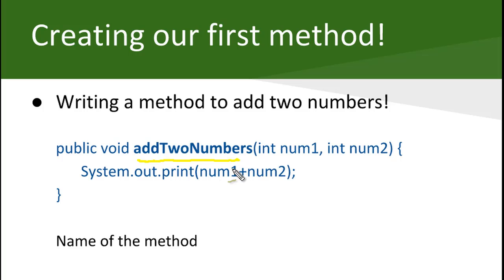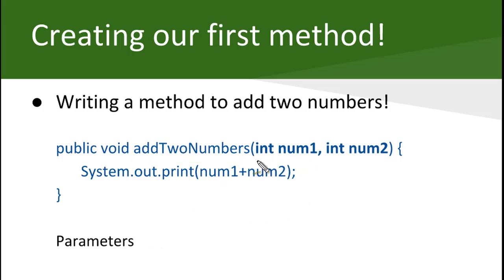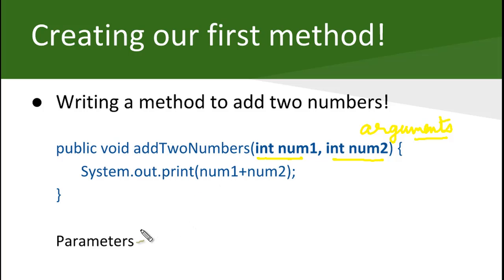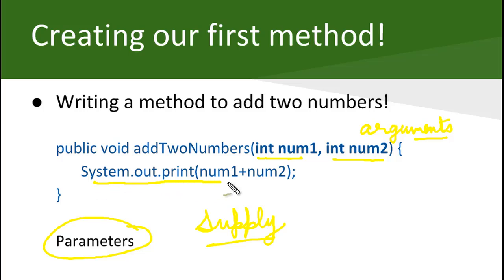Now coming to the coolest part of the method — the name. We have named our method 'addTwoNumbers', so this is the name of the method. Next are the parameters, also called arguments. This method is taking two integers, num1 and num2 — these are the arguments or parameters of the method. This is what you supply to the method, and it may or may not return something, but it will do something with what you supplied. Here you supplied two numbers and it prints their sum.